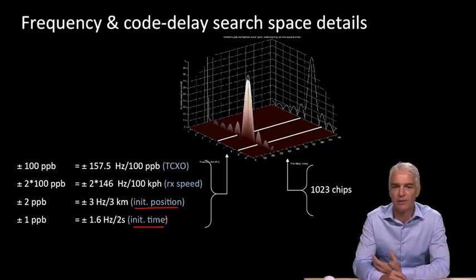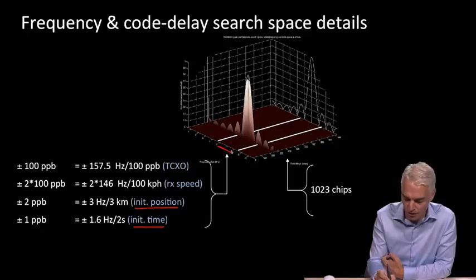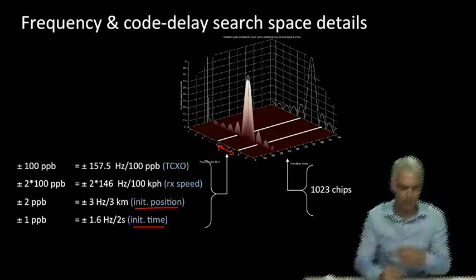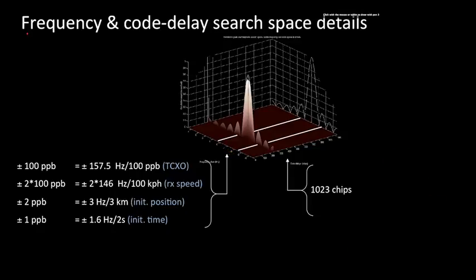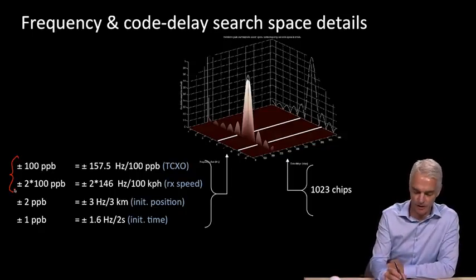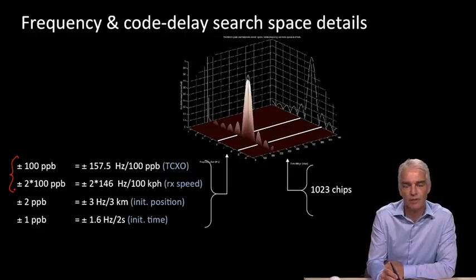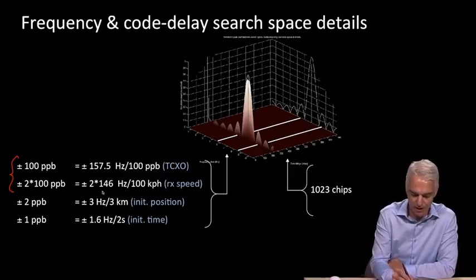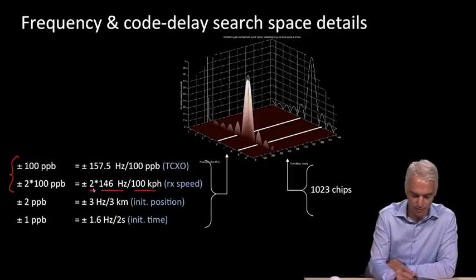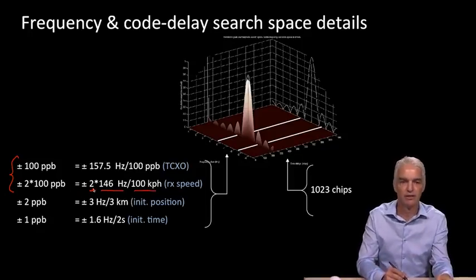Instead of searching the whole area, we're just searching between the lines. How far apart should those lines be? That's what we're looking at today. We're now going to look at the effect of the TCXO and the effect of receiver speed. We already looked at receiver speed in module four, with 146 hertz for every 100 kilometer per hour the receiver is moving. Now we have this two times factor. Where does this come from? We'll see in the next slide.